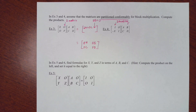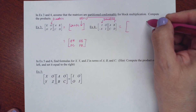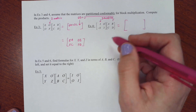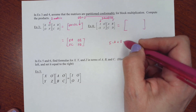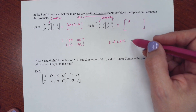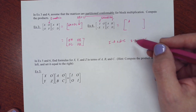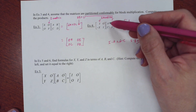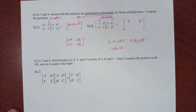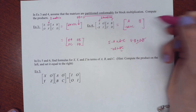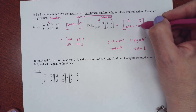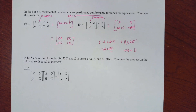In the next example with blocks [[I, 0], [−X, I]] times [[A, B], [C, D]]: top-left is I·A + 0·C = A; top-right is I·B + 0·D = B. Bottom-left is −X·A + I·C = −XA + C. Bottom-right is −X·B + I·D = −XB + D. So the result is [[A, B], [−XA + C, −XB + D]].